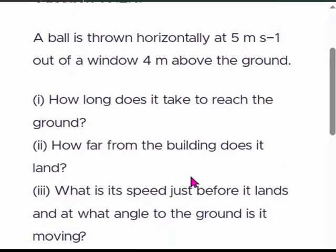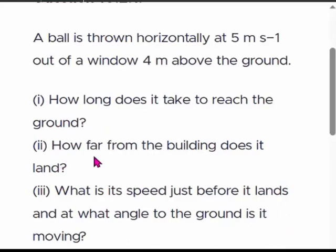A ball is thrown horizontally at 5 meters per second out of a window 4 meters above the ground. It is thrown out of the window at 5 meters per second speed and reaches the ground after some time. The first question is: how long does it take to reach the ground? How far from the building does it land? What is its speed just before it lands and at what angle to the ground is it moving? Basically, it goes like a projectile and lands at an angle, and we need to find the speed as well as the angle before it hits the ground.